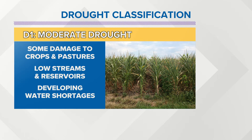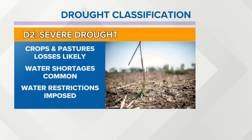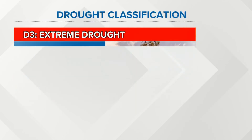Some of the other criteria include river flow and things like that. With a moderate drought, we're talking about some damage to the crops and pastures, low streams and reservoirs. You're already starting to see the effects there, along with developing water shortages — so that's when it really starts to turn the corner. With severe drought, you definitely have crop and pasture losses, likely water shortages become common, and water restrictions start to be imposed.